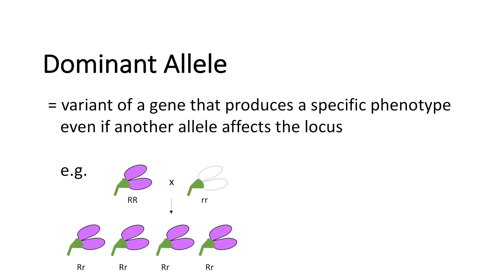The purple color of the offspring is exactly the same as from the father or mother, which is the uppercase R, uppercase R. The dominant allele completely masks the recessive one in a heterozygous organism.